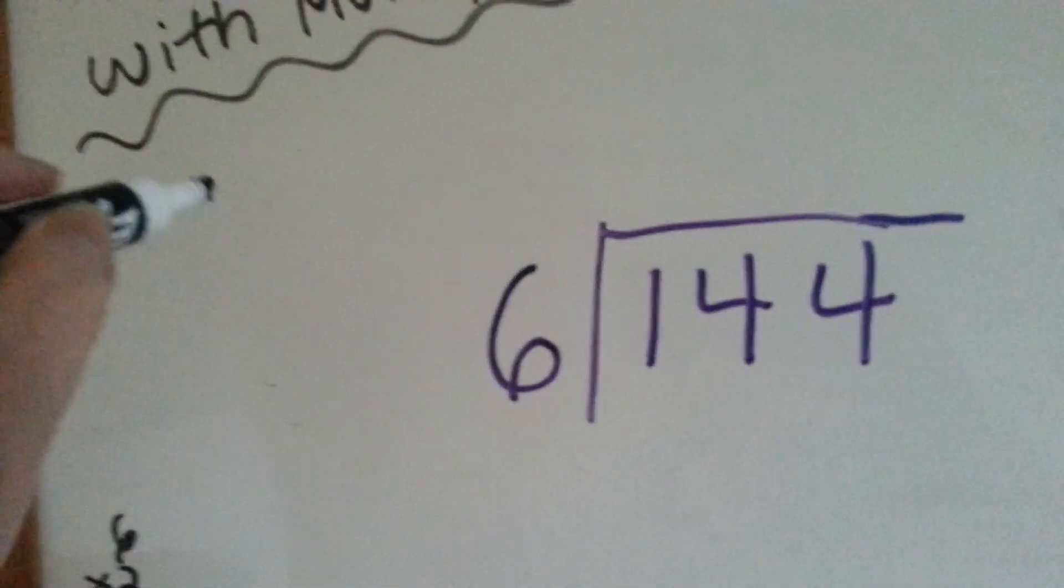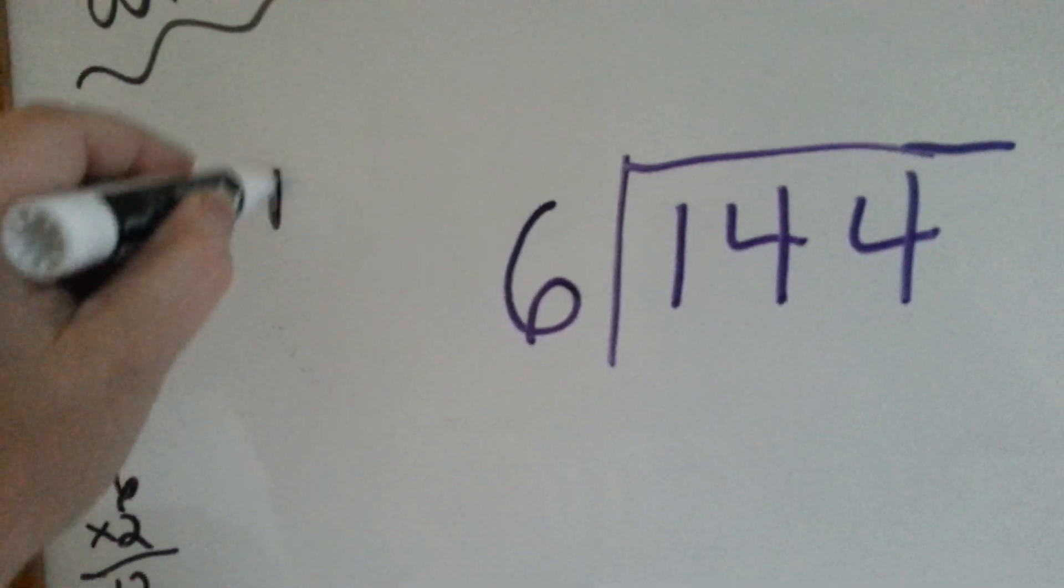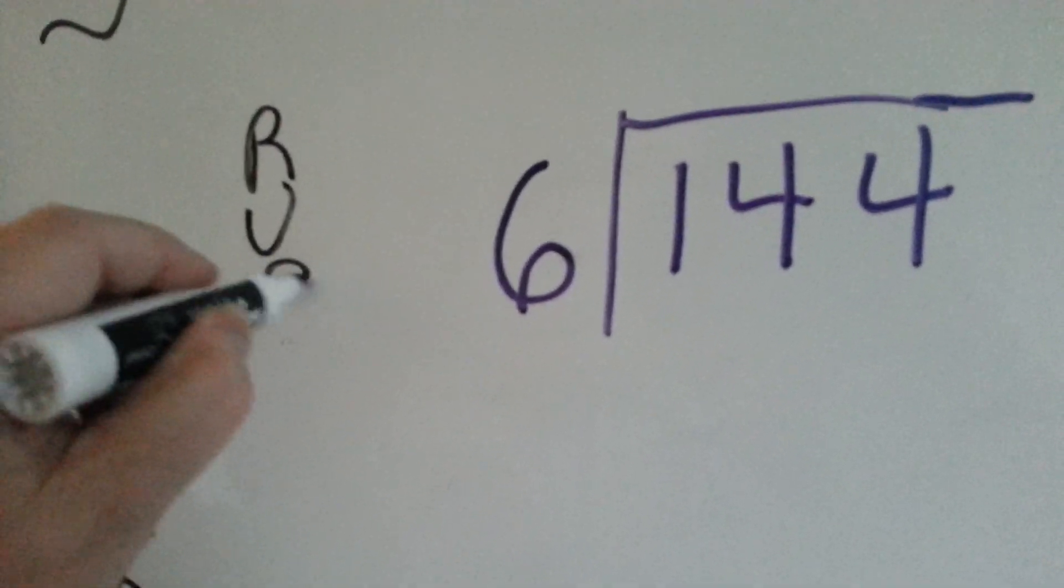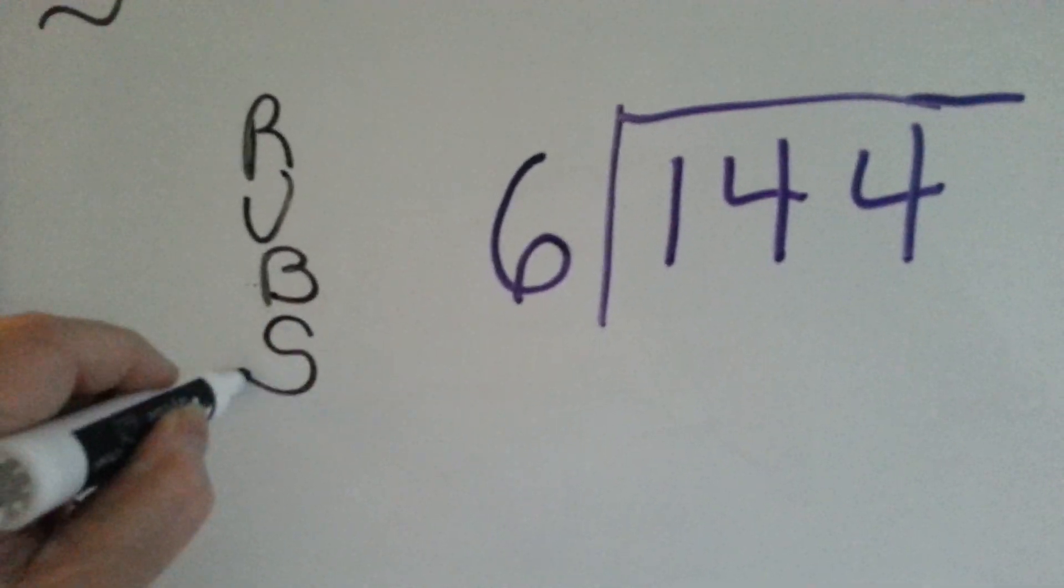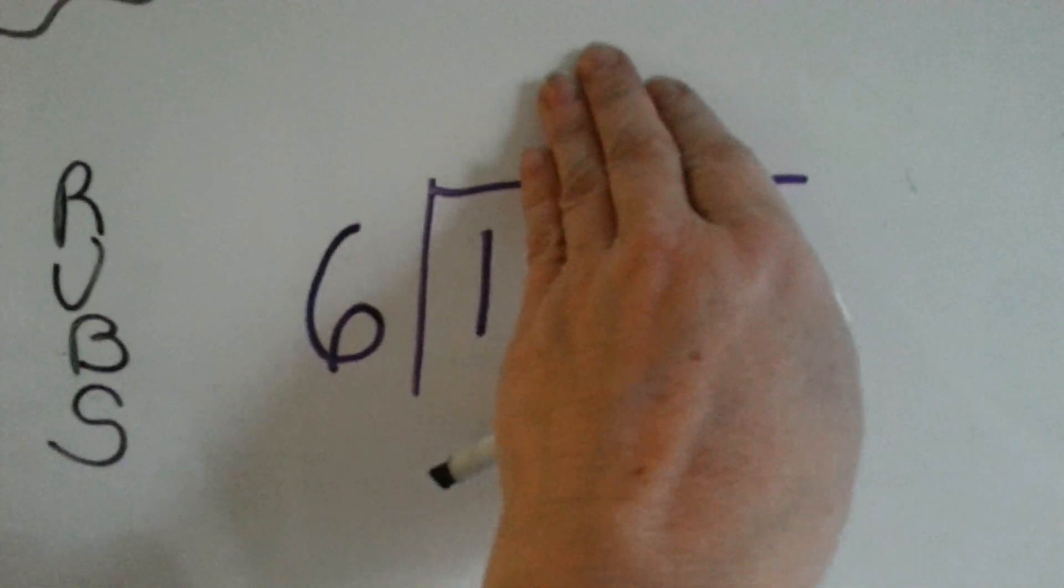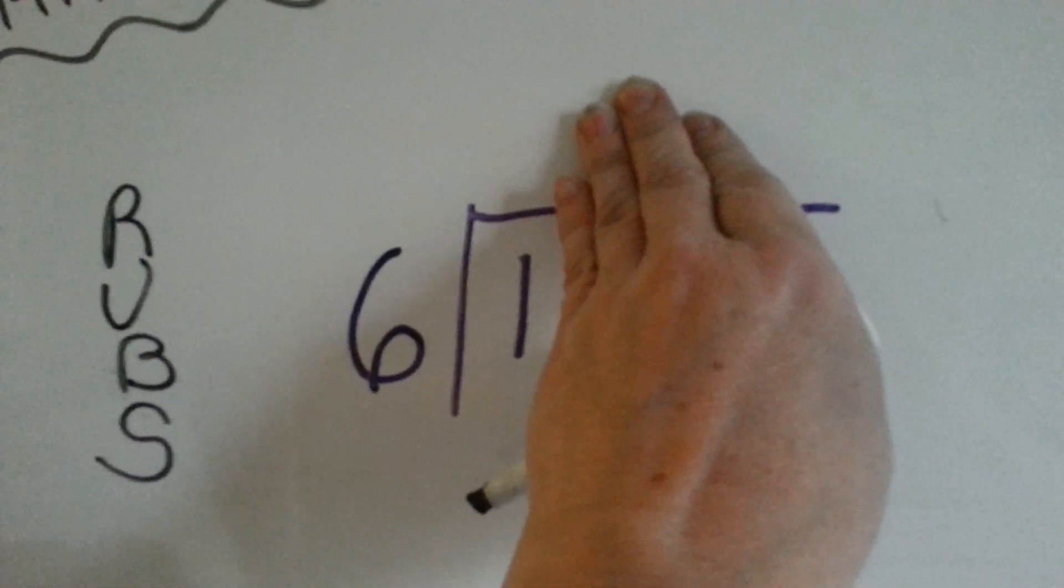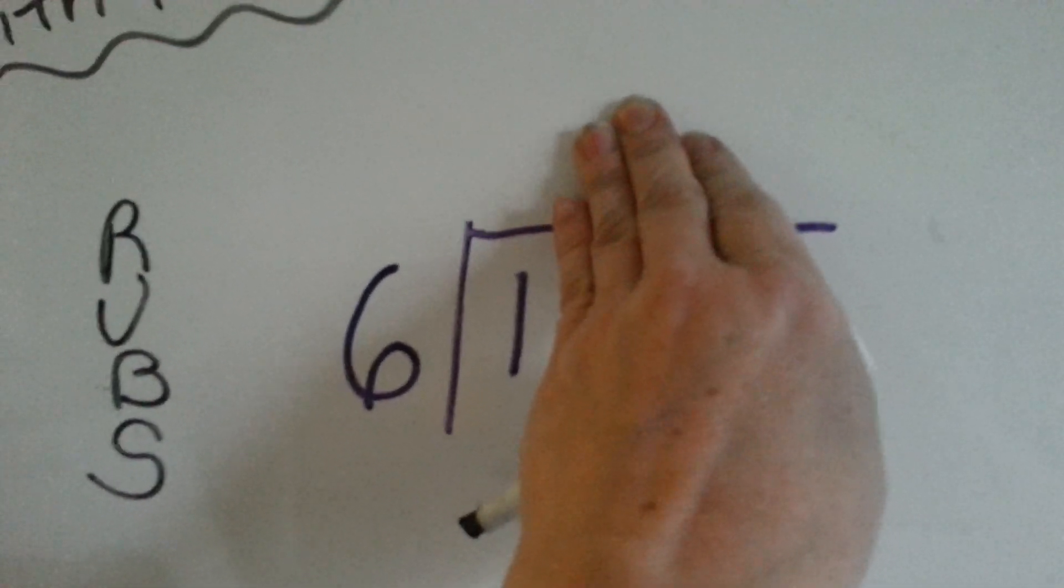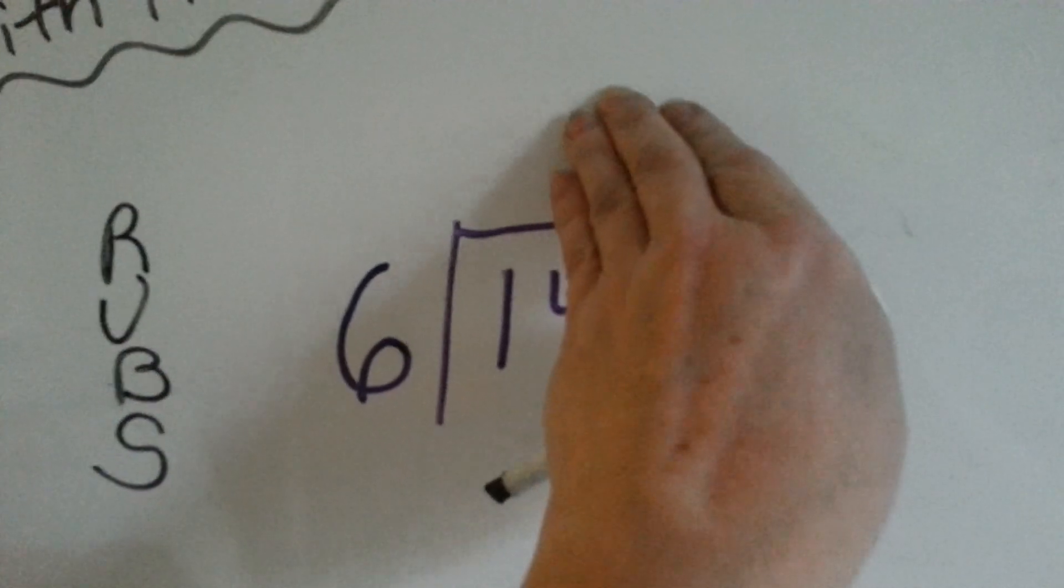Remember, what we do is we go right, then we go up, then we put the number below, and then we subtract. So first thing we're going to ask is, when we go right, can 6 fit into 1? No, it can't. So we move over.